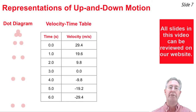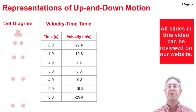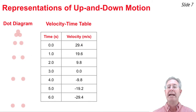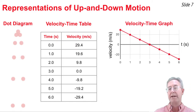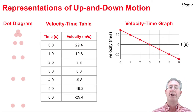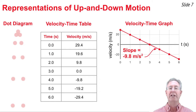In the velocity timetable for up-and-down motion, at time zero the object has a positive initial velocity because it was thrown upwards. Over time, velocity decreases by 9.8 meters per second each second until at three seconds it reaches its highest peak with zero velocity. After that, it acquires negative velocity, increasing by 9.8 meters per second in the negative direction each consecutive second. On the velocity-time graph, the line starts high in the positive region, decreases to zero at three seconds, then increases in the negative direction. The slope is negative 9.8 meters per second squared.